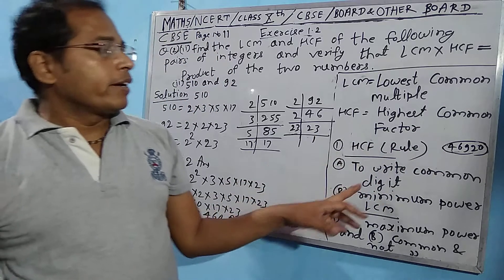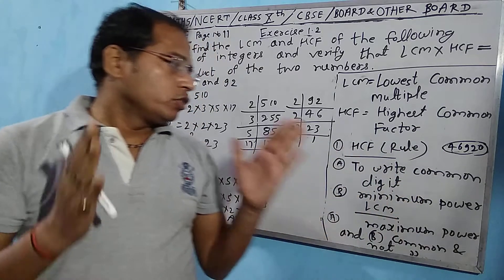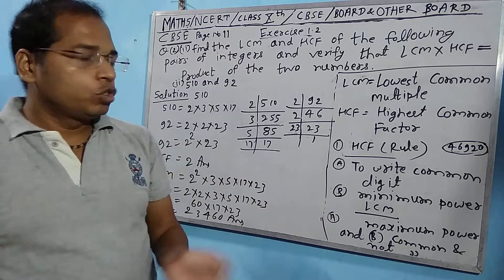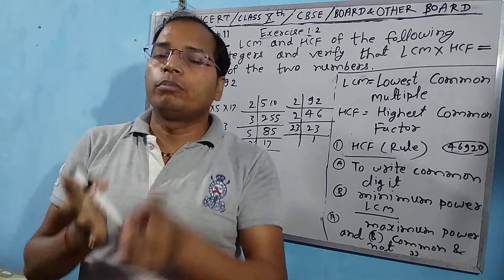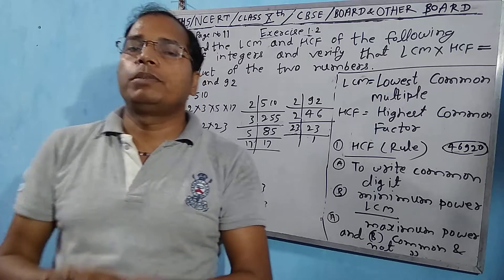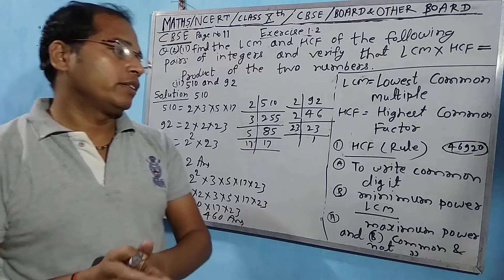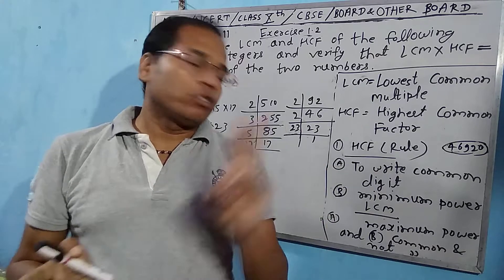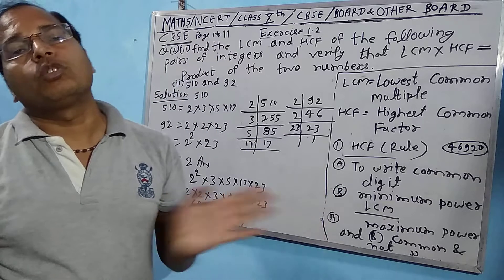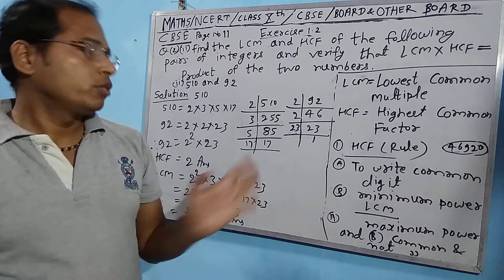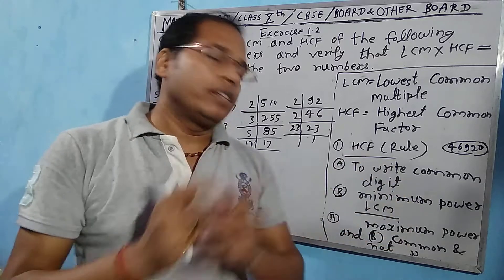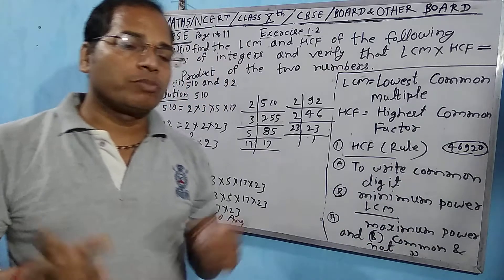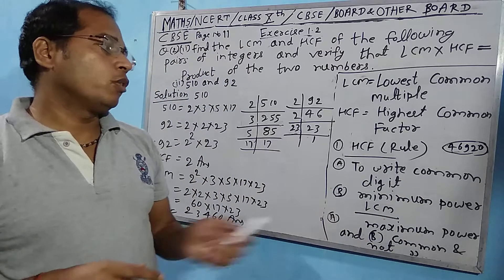The rule for HCF is to write the common digits only — whatever is common in both numbers, write it; whatever is not common, do not write it. When making HCF, we always look for the minimum power among the common factors.